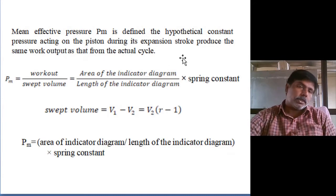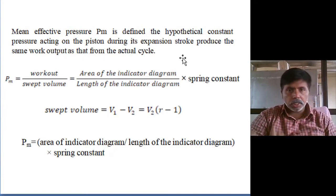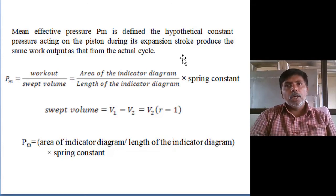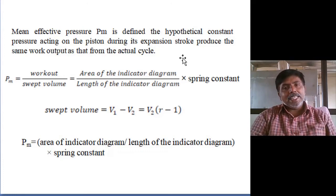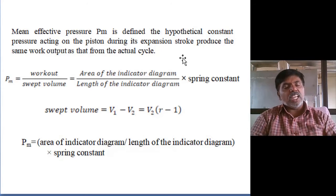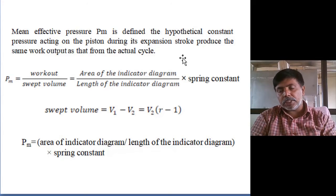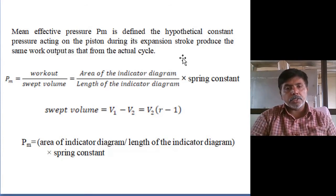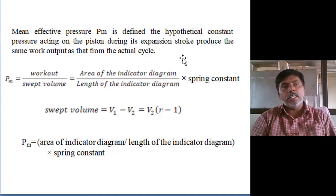The mean effective pressure — first we want to determine it using the indicator diagram. Theoretically, it is a hypothetical pressure acting on the piston during the expansion stroke from start to end. It is an average pressure acting on the piston in the expansion. At the start of expansion, the highest peak pressure is there; at the end, nominal pressure above ambient. Theoretically, it equals work output divided by swept volume.